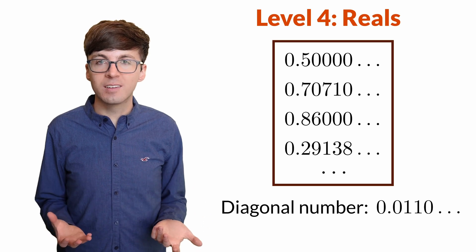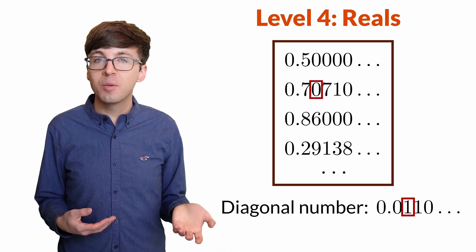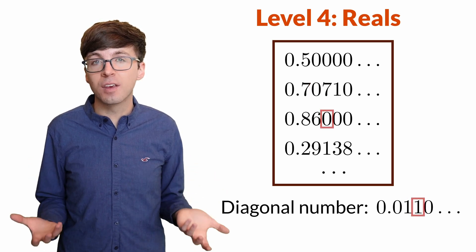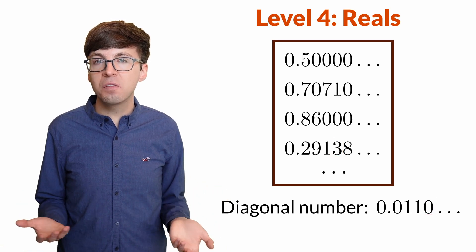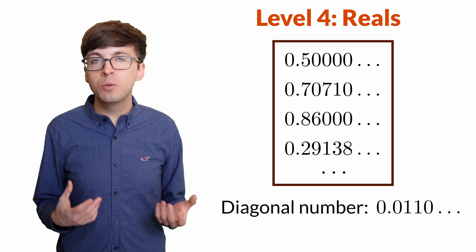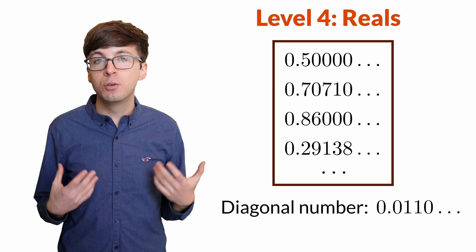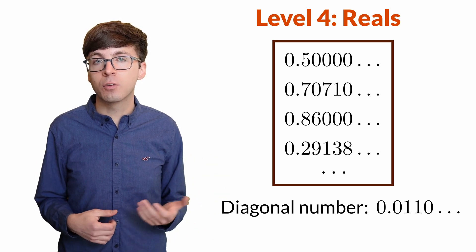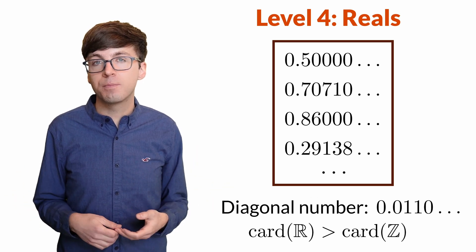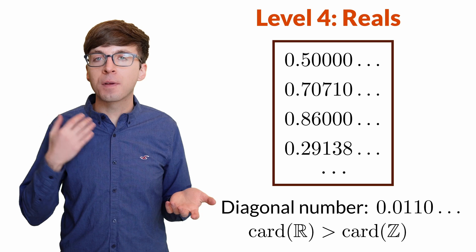This diagonal number is a real number between 0 and 1, so it's supposed to be in our perfect list — but which one is it? It can't equal the first number because they have different first digits, and it can't equal the second number because they have different second digits. In fact, the diagonal number we created can't be in the list at all. So the list was not perfect — it's missing this diagonal number, and that is a logical contradiction. We must conclude that there is no way to assign the real numbers to rooms in hotel infinity. The real numbers have a larger cardinality than the integers, and we've now shown that there are two different sizes of infinity.